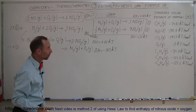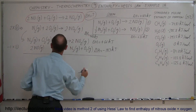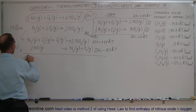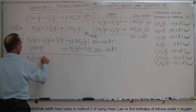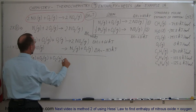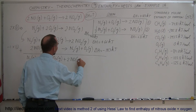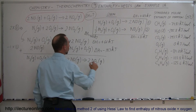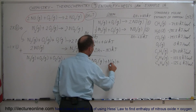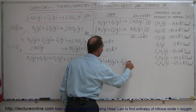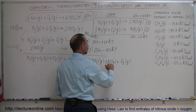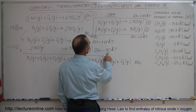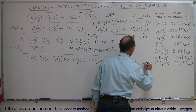Why did I do that? The plan is to go ahead and add these two equations together. Adding them, on the left side we get nitrogen gas plus oxygen gas plus oxygen gas plus 2 moles of nitrogen monoxide gas. On the right side we end up with 2 moles of nitrogen dioxide gas, 1 mole of nitrogen gas, and 1 mole of oxygen gas. When I add these two together I also add the enthalpy changes: delta H equals minus 183 plus 66, which gives minus 117 kilojoules.